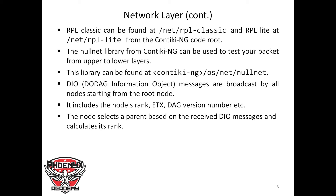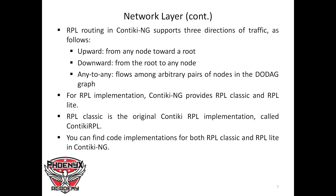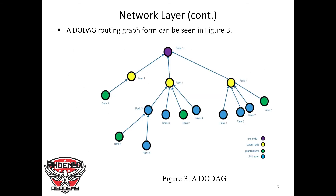We also have the DIO — DODAG Information Object. These are packets broadcasted by all nodes starting from the root node. They include the node rank, ETX, DAG version number, and other information. A node selects a parent based on the received DIO message and calculates its rank. Children nodes in the DODAG select their parent by receiving a DIO packet and choosing the node with the lowest rank.